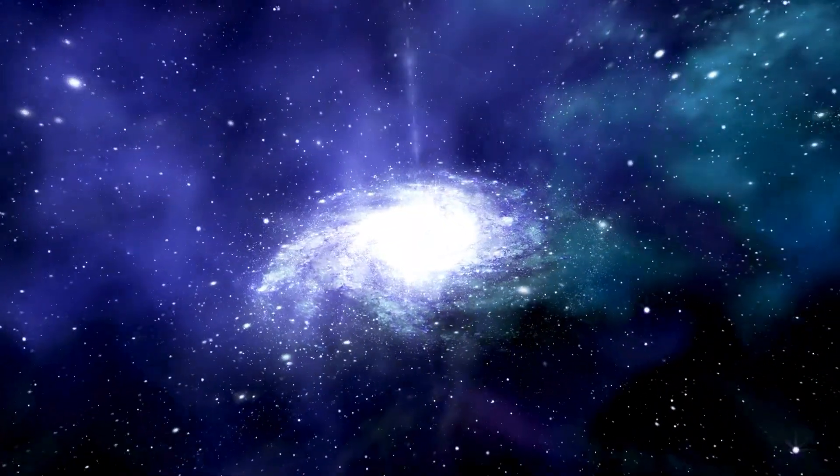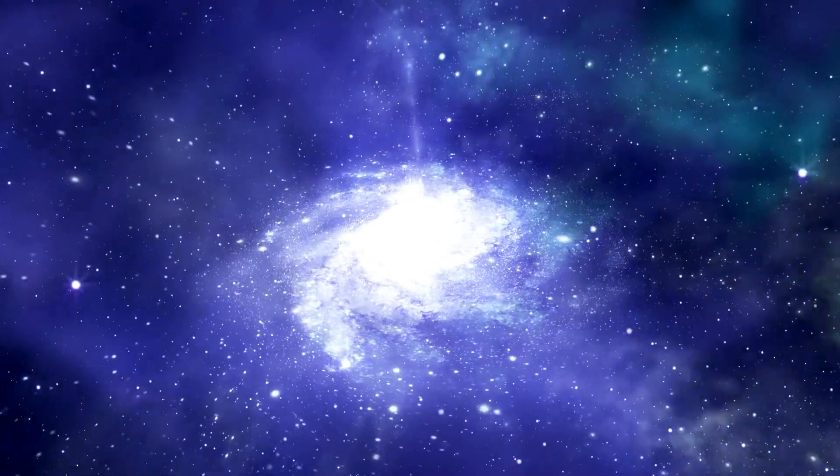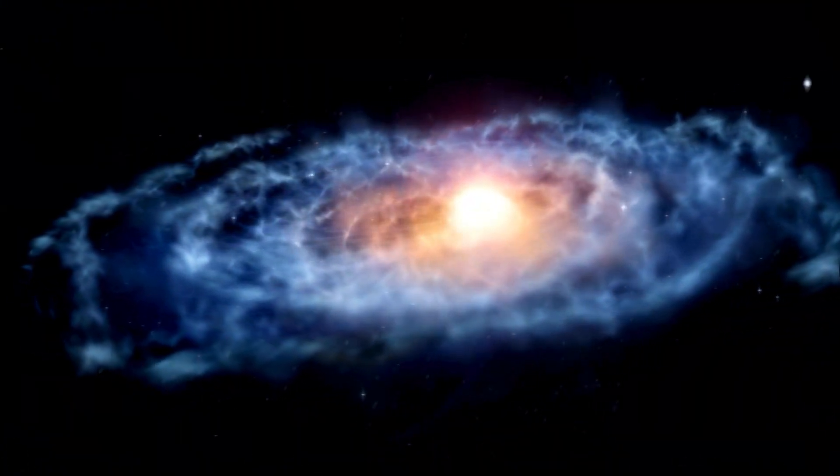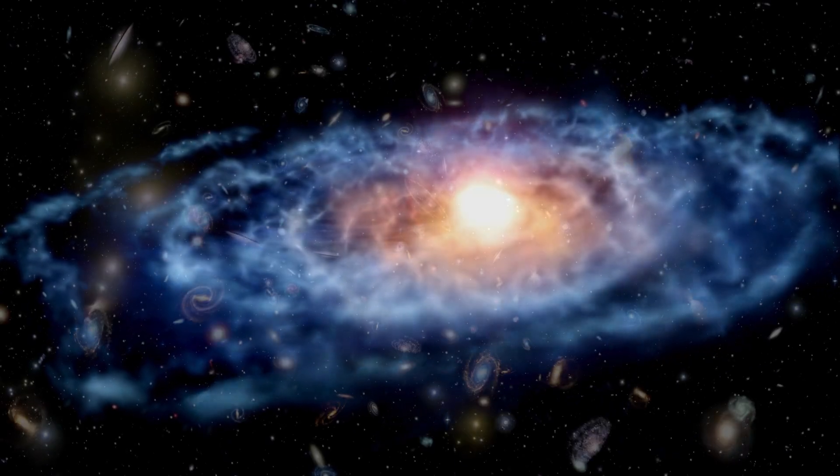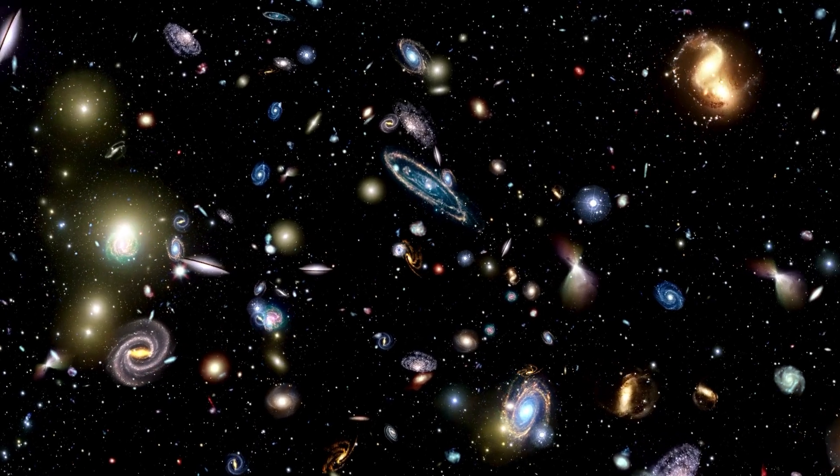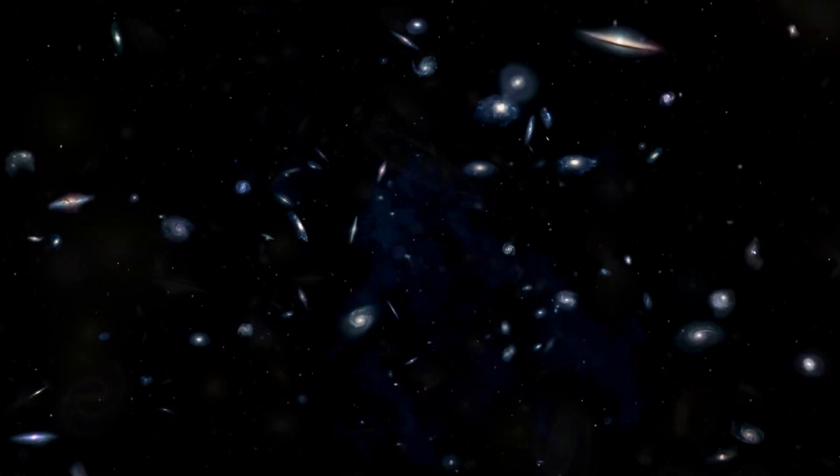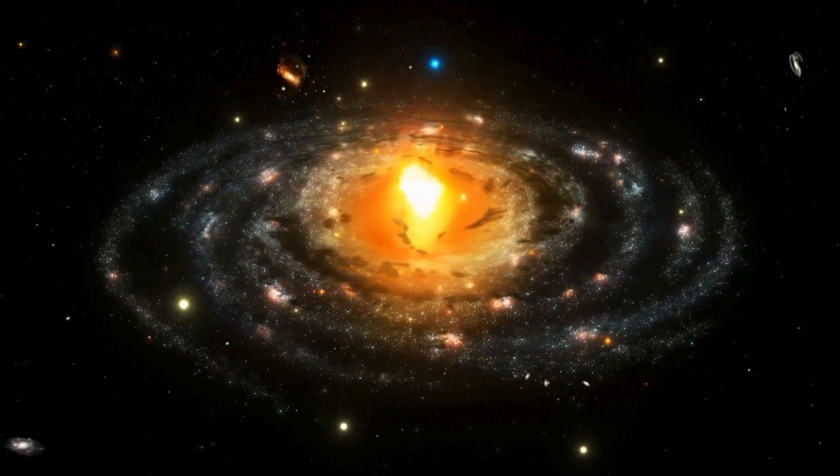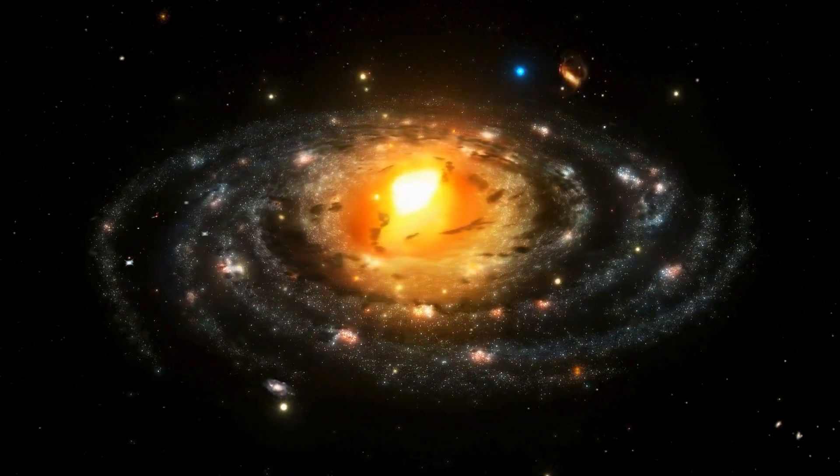The structures we see today follow a clear hierarchy. I'm simplifying a little, but broadly speaking, stars form galaxies, galaxies form galaxy groups and clusters, and galaxy groups and clusters band together to form superclusters. In our little corner of the universe, the hierarchy looks something like this.